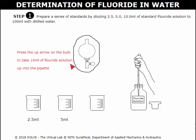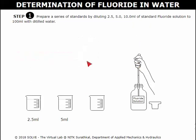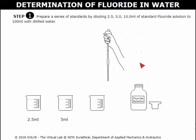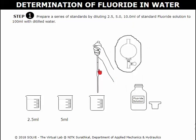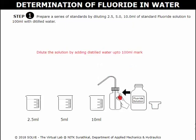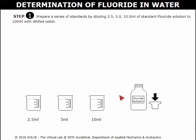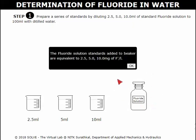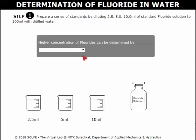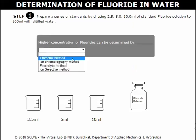Click here to pipette 10 ml of standard fluoride solution, then add it into another beaker and add distilled water into the beaker. Close the lid. Go through the instructions carefully. Select the correct answer for the pop-up question to proceed to the next step.